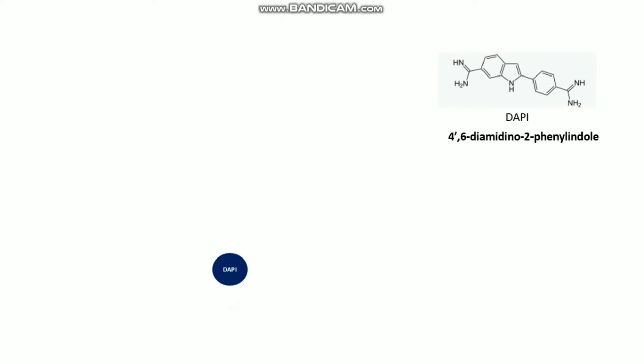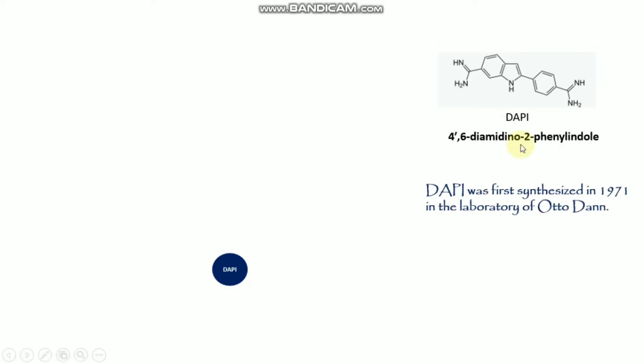This is the DAPI structure and the chemical name. As we know, DAPI can bind with DNA and it gives blue light under UV. DAPI was first synthesized in 1971 in the laboratory of Otto Dunn.